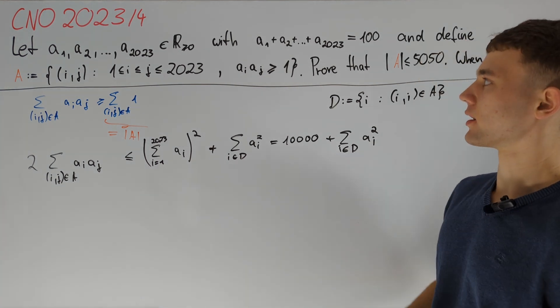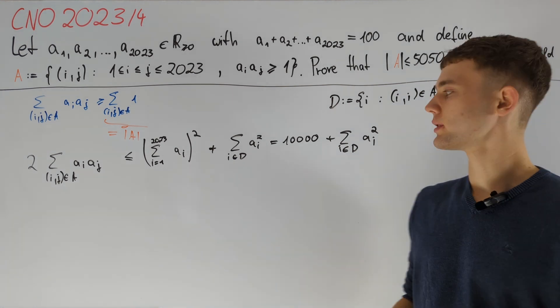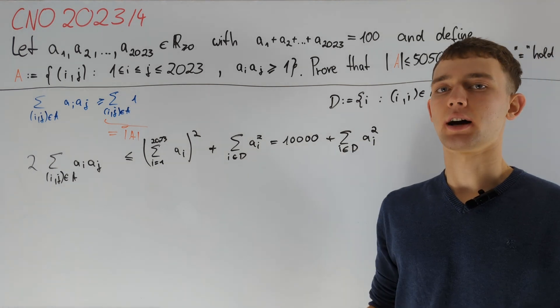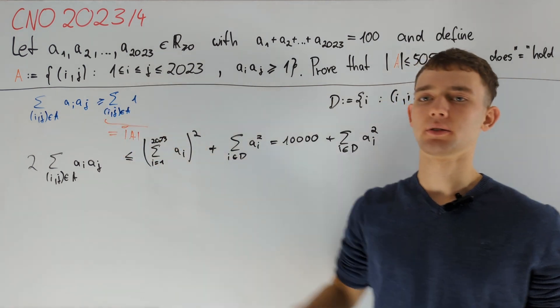Sadly this is not the case. Consider for example the instance with a1 equal to 100, and then this is just 10000, much larger than 100. This motivates us to improve our first bound here.